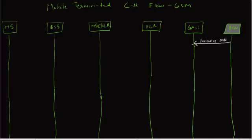After the gateway MSC receives the incoming call request, it sends a MAP protocol Send Routing Info request to the particular HLR after analyzing the MSISDN number.